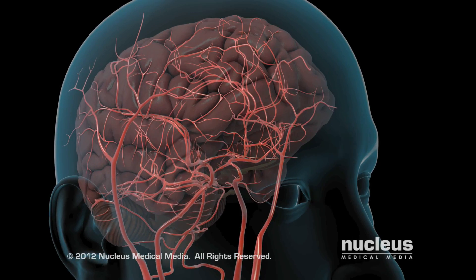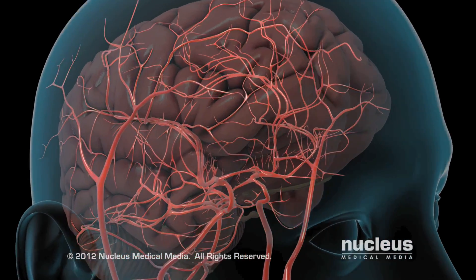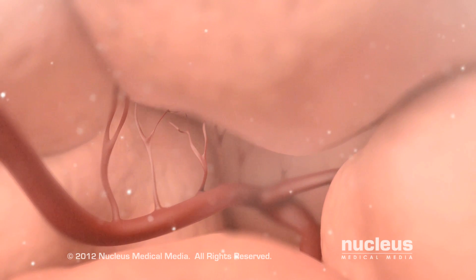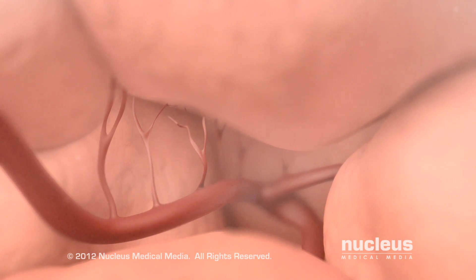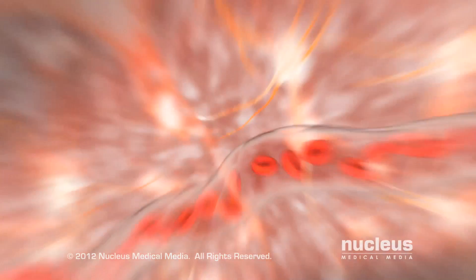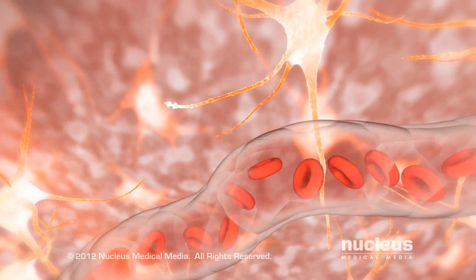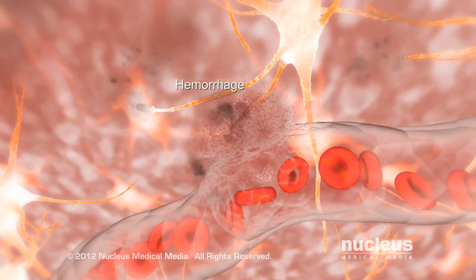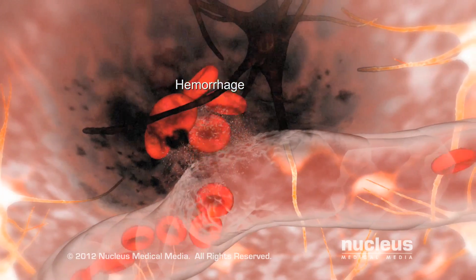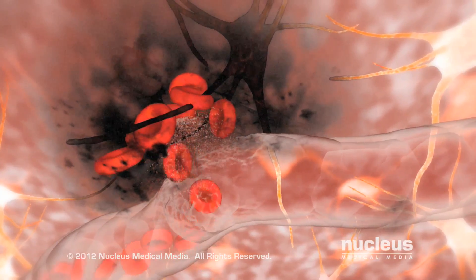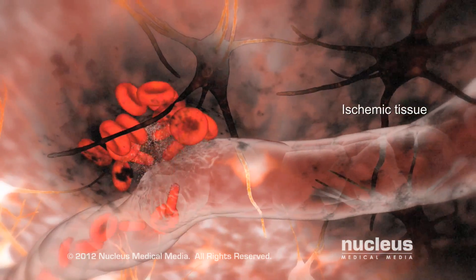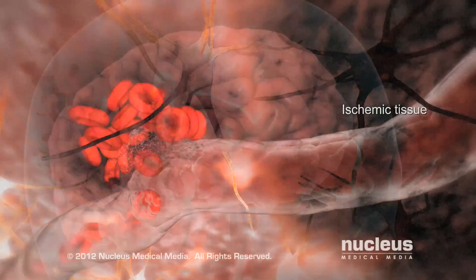During a hemorrhagic stroke, abnormal bleeding disrupts normal blood flow. For example, in an intracerebral hemorrhagic stroke, a blood vessel bursts, spilling blood directly onto your brain while robbing the intended tissue of nourishment. Both the hemorrhage and lack of blood supply, called ischemia, destroy brain tissue.